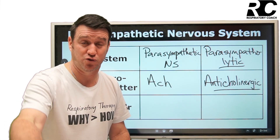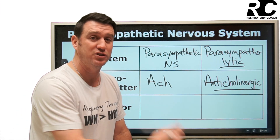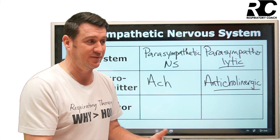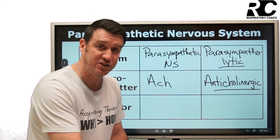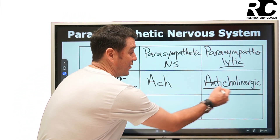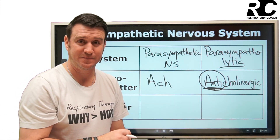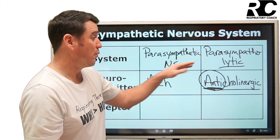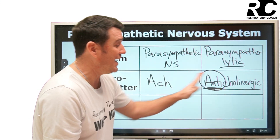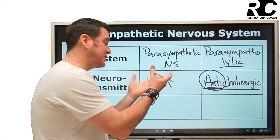We don't give cholinergic drugs to cause bronchodilation because giving a cholinergic would actually cause bronchoconstriction — like during a methacholine challenge as part of a pulmonary function test for assessment of airway reactivity. Methacholine is a cholinergic; it causes bronchoconstriction. So what we want to give is an anticholinergic. The 'anti' means to block the effects of acetylcholine. We give a drug that looks like acetylcholine but blocks the receptor from responding to it.